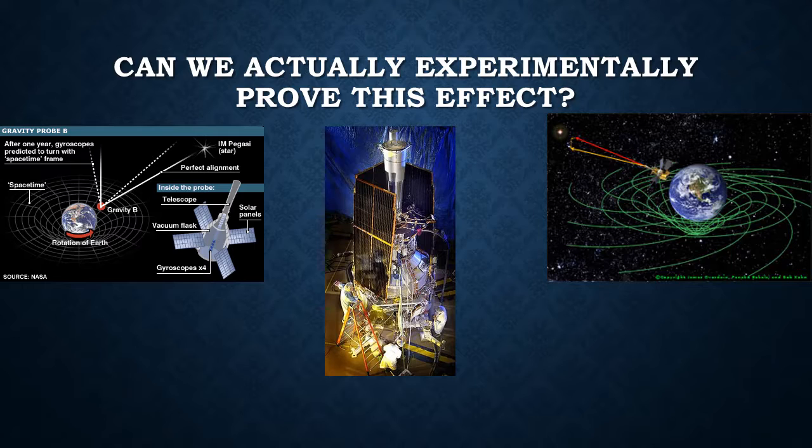So far, there has been one extremely good experiment that was able to prove the effect of frame-dragging experimentally to within 1%. This was the Gravity Probe B experiment, which involved launching a satellite to orbit that had four extremely precise gyroscopes on board. By having the gyroscope's axis initially pointed at a distant star which acted as a reference, NASA was able to measure the precession of the gyroscopes as they orbited the Earth.